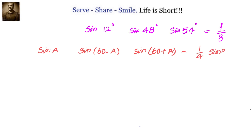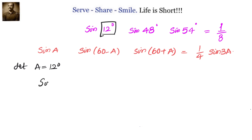If you want to know how this formula is derived, you can check the video from about one or one and a half months back where we worked on this. The formula is: sin A into sin(60 minus A) into sin(60 plus A) equals 1/4 sin 3A. Now let us consider A equals 12 degrees.